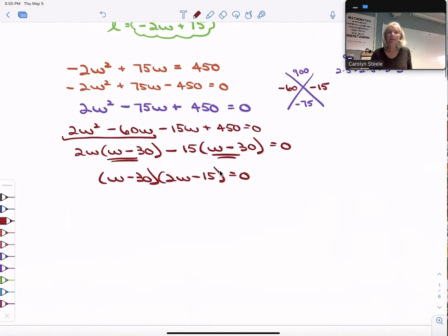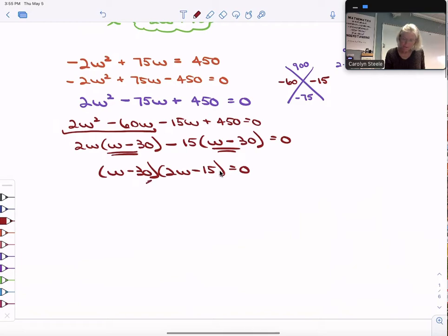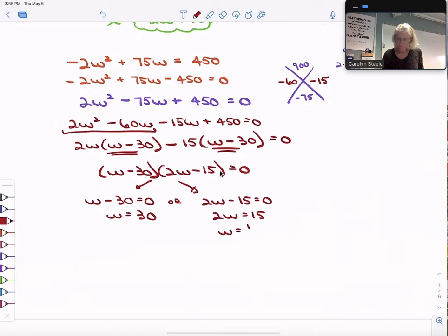Okay, once it's factored, now I can use the ZPP, zero product property. This means either W minus 30 is equal to zero, in which case W is equal to 30, the width is 30, or 2W minus 15 is equal to zero, and 2W is equal to 15, or W is equal to 15 halves. Now here's an example where I'm always like, keep it as a fraction. When we're in a real world problem, it's probably best to keep it now maybe as a decimal or as a mixed number. And I'm just going to write this then as seven and a half.